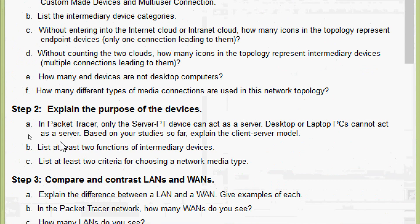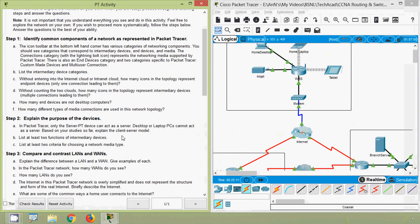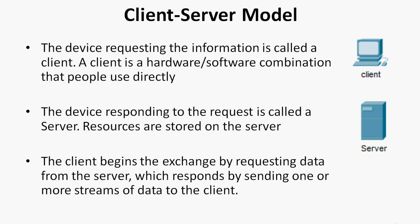Now coming to step two, explain the purpose of the devices. Part A: in Packet Tracer, only the server-PT device can act as a server; desktop or laptop PCs cannot. The client-server model: the device requesting the information is called a client — a hardware or software combination that people use directly. The device responding to the request is called a server, where resources are stored. The client begins the exchange by requesting data from the server, which responds by sending one or more streams of data to the client.